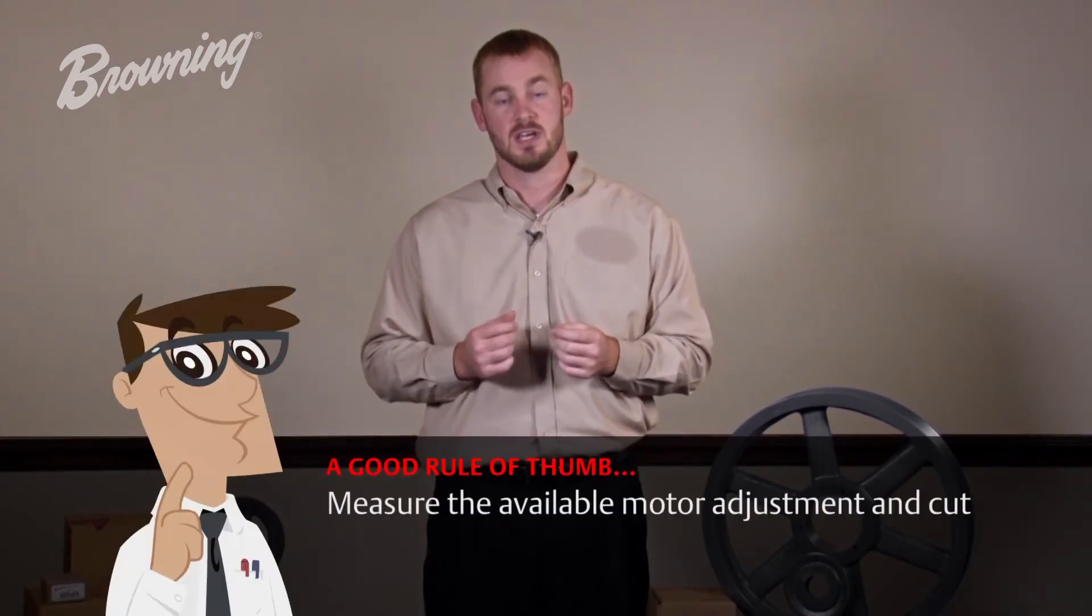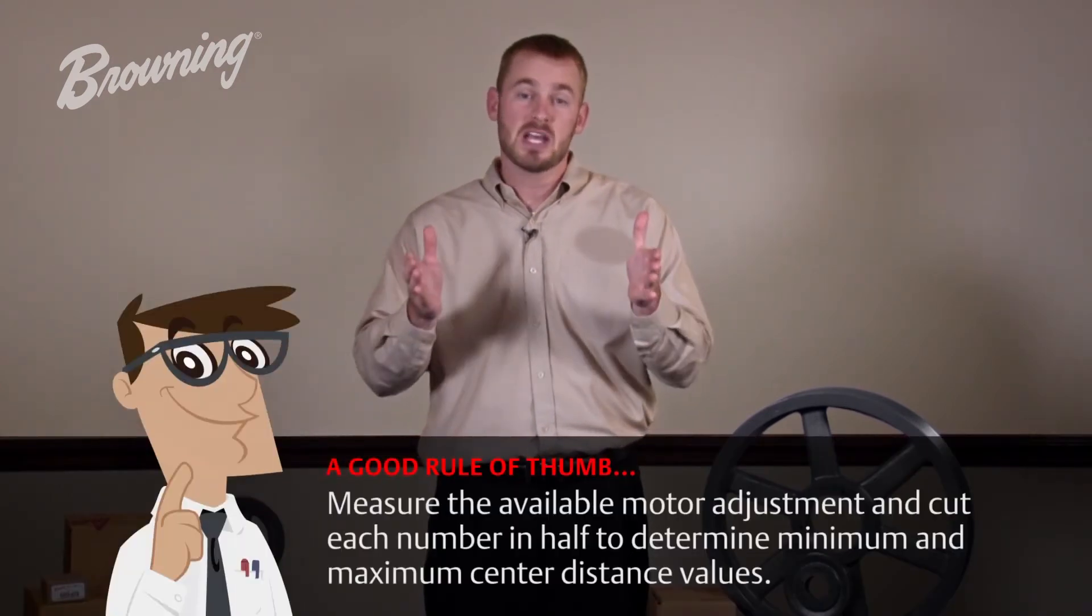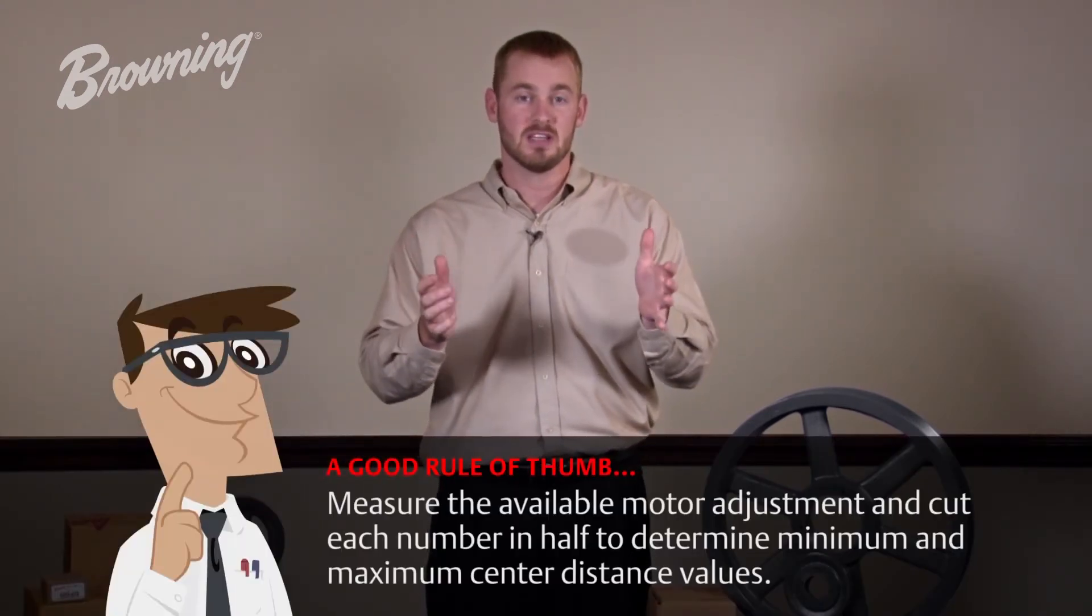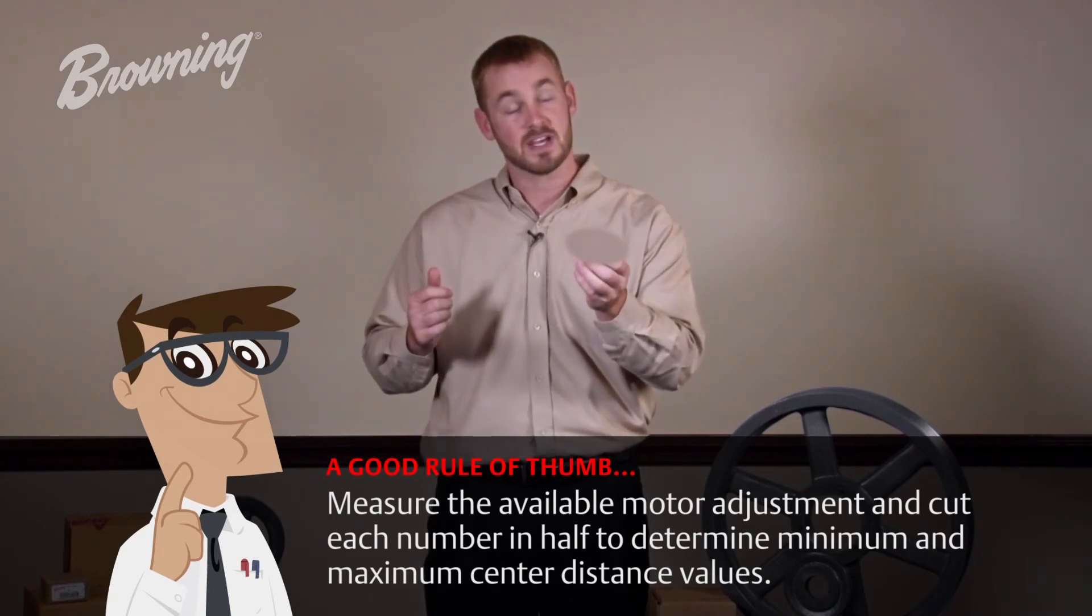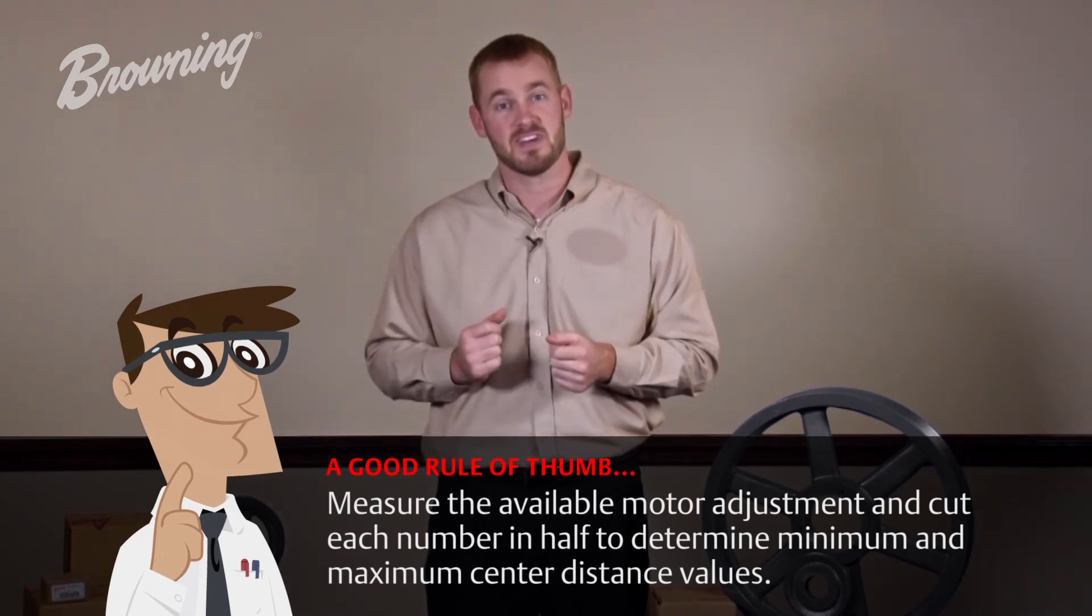Please do your best when measuring minimum and maximum center distance. A good rule of thumb is to measure the available motor adjustment and cut each number in half to determine minimum and maximum values. Keep in mind, for Browning to select a retrofit solution, we need a minimum of 2 inches in center distance variation.